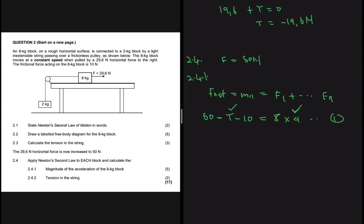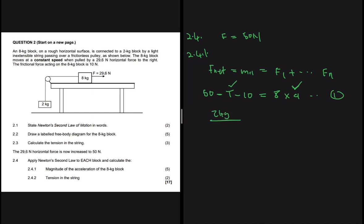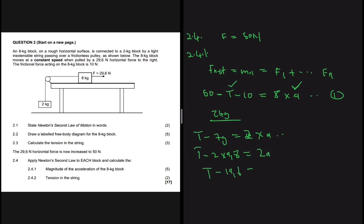The question says to apply Newton's second law to each block, which gives it away. Even if it didn't, when you have two unknowns you must use the other block for a second equation. For the 2 kg block, two forces act: tension and gravity. So: T − F_g = 2a. Here F_g = 2 × 9.8 = 19.6 N, giving us T − 19.6 = 2a. This is equation 2.